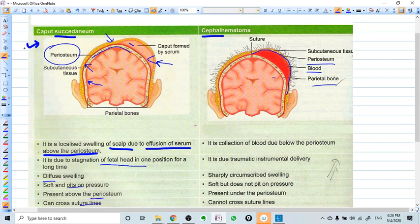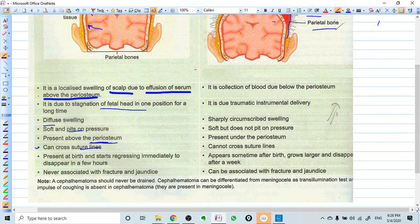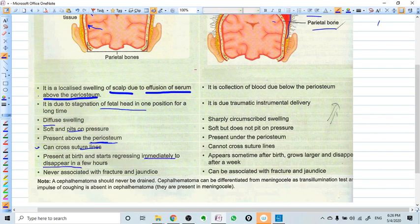Present above the periosteum, as we see present above the periosteum, it can cross the suture line because it is above the periosteum. It has nothing to do with the suture in the bones and the periosteum, so it can readily cross the suture lines. It presents at the birth and start regressing immediately after birth, and actually it is disappeared within few hours.